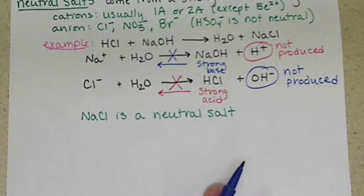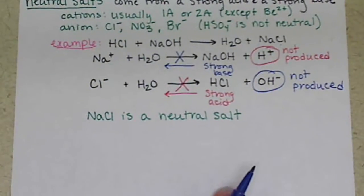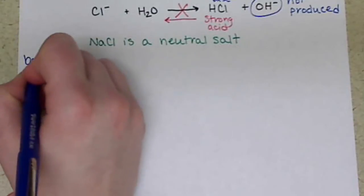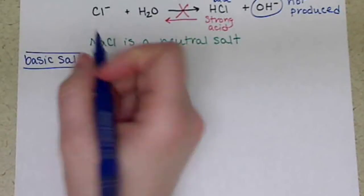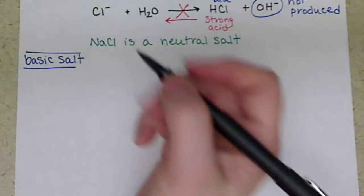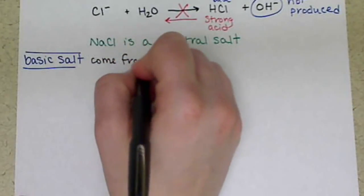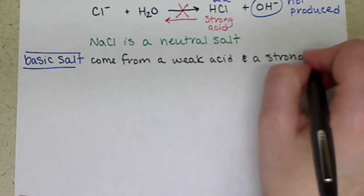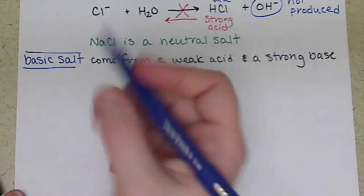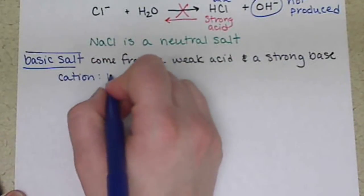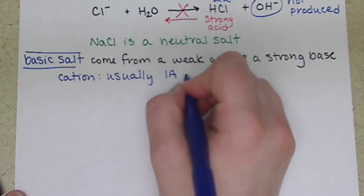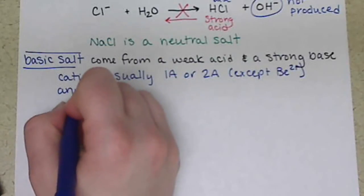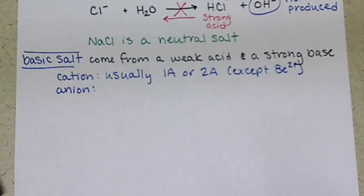If we look at an example of a basic salt, basic salt is going to come from a weak acid and a strong base. So our cation, again, is going to usually be something from group 1A or 2A, except beryllium. And our anion, in this case, is going to be the conjugate base of a weak acid.